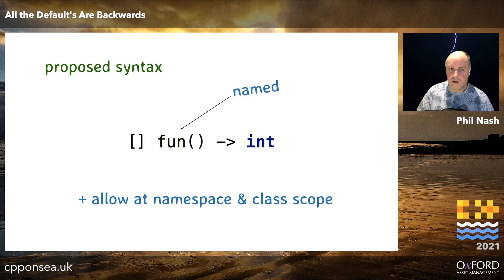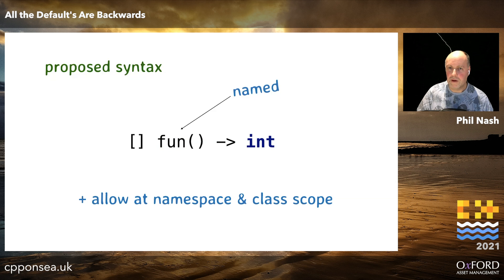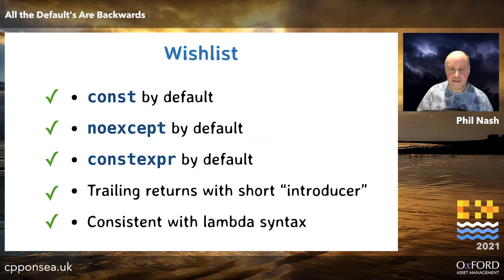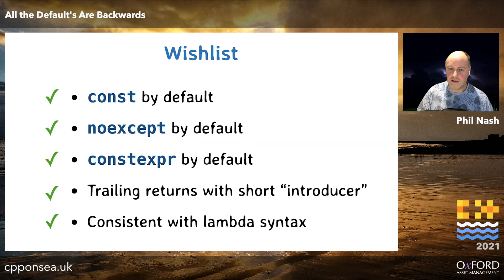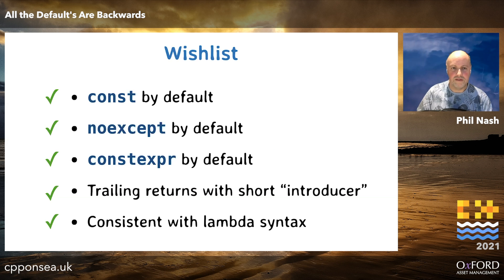We'd also need to make a couple of other changes — allow them at namespace and class scope — but those are pretty small changes really. We get everything on our wish list, which is pretty good. You have to squint a bit, particularly around constexpr, but that is basically it.